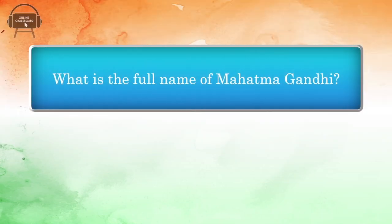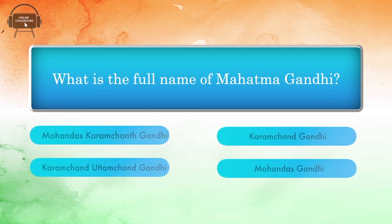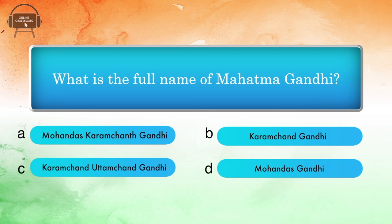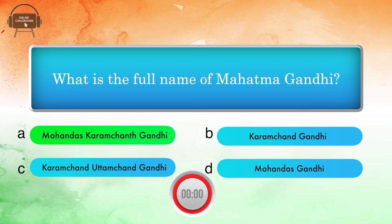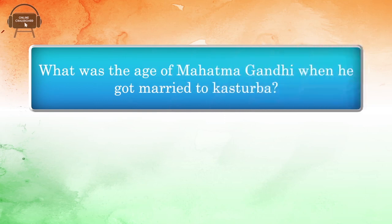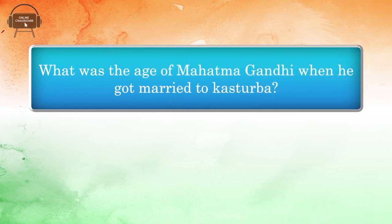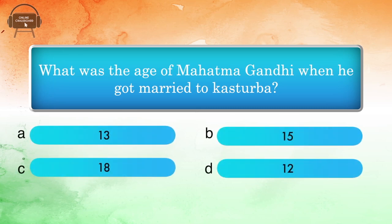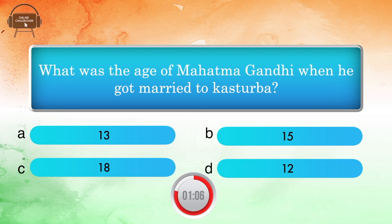What is the full name of Mahatma Gandhi? Options: Mohandas Karmachand Gandhi, Karamchand Gandhi, Karamchand Uttamchand Gandhi, Mohandas Gandhi. Answer: Mohandas Karmachand Gandhi. What was the age of Mahatma Gandhi when he got married to Kasturba? Options: 13, 15, 18, 12. Answer: 13.